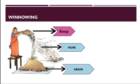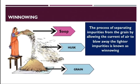Dear students, you can see in the picture where is the husk going and where are the grains. And this process of separating impurities from the grains by allowing the current of air to blow away the lighter impurities is known as winnowing.